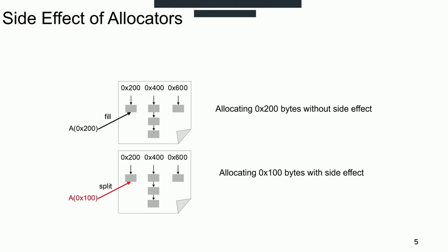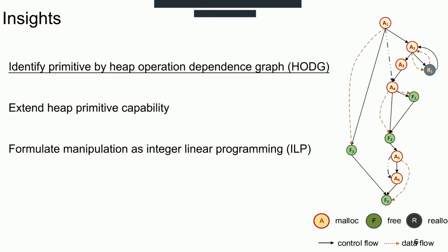To tackle the challenges mentioned before, we briefly introduce our insights. First, we design a heap operation-dependence graph to identify primitives precisely, which is constructed by dynamic tracing. The nodes of the graph are heap operations, and the edges are data flows and control flows.